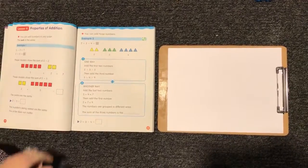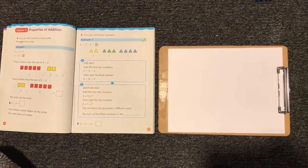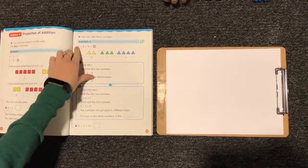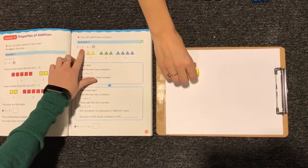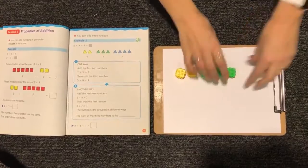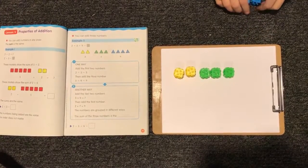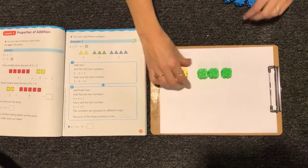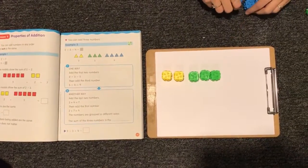Example 2. For example 2, we're going to be adding 3 numbers. So we're going to do 2 plus 3 plus 4, and we're going to solve that. So let's use our counters. Remember at home, you can use anything, Cheerios, M&Ms, Legos, whatever you can find.